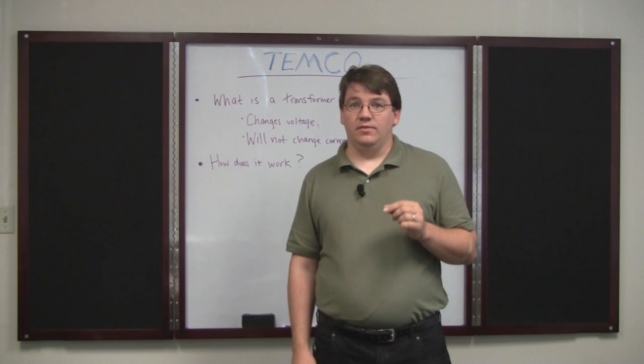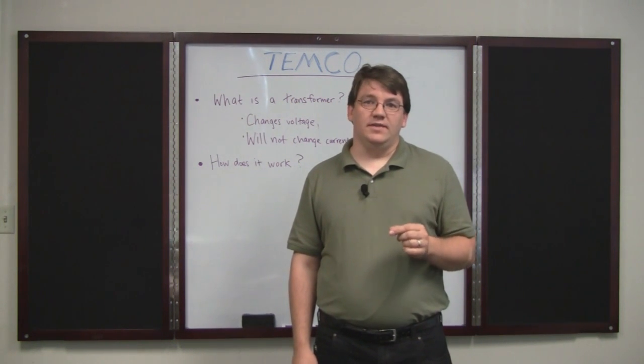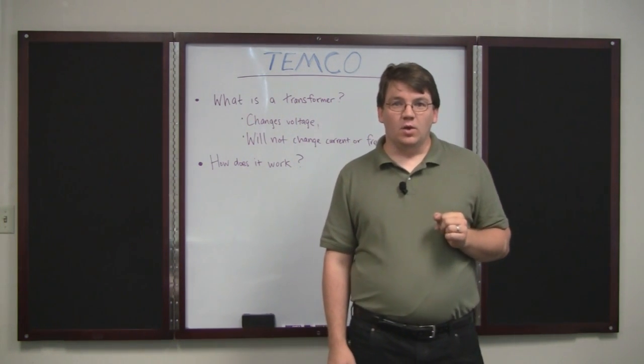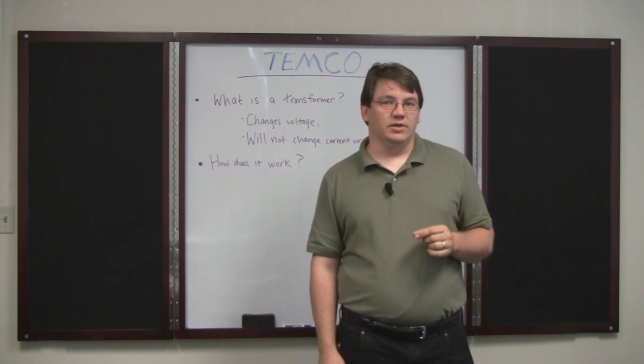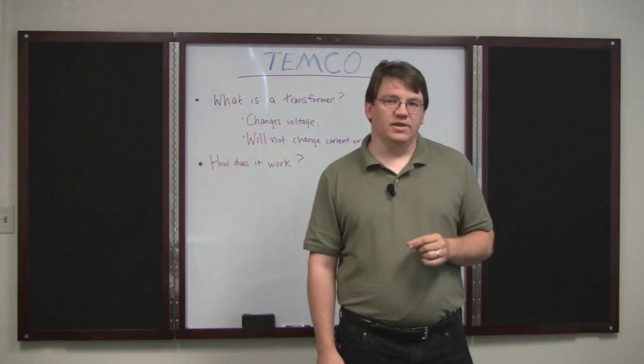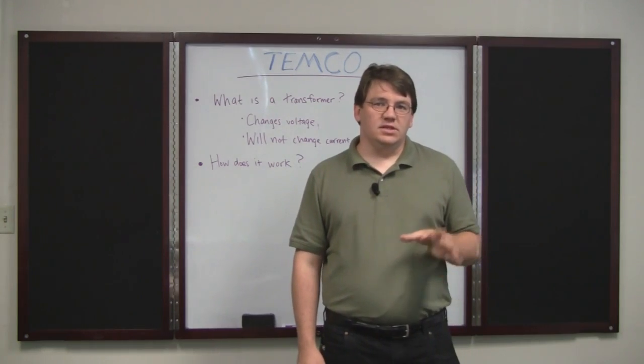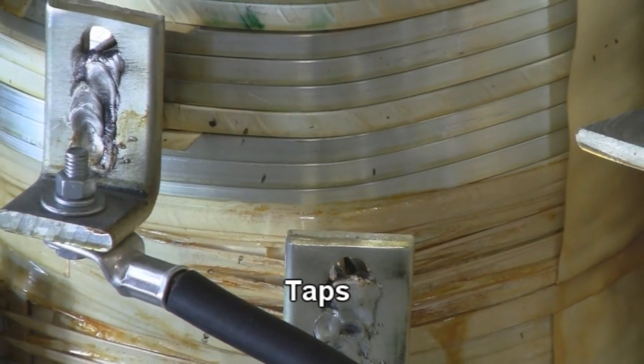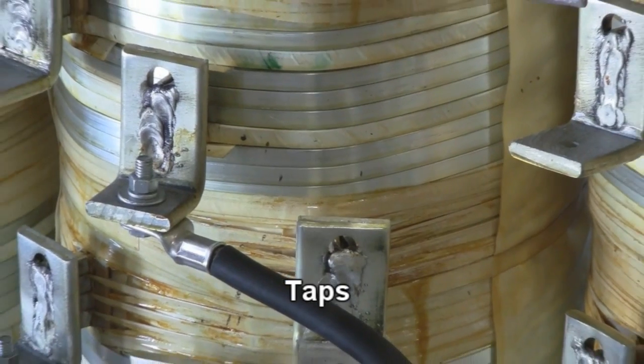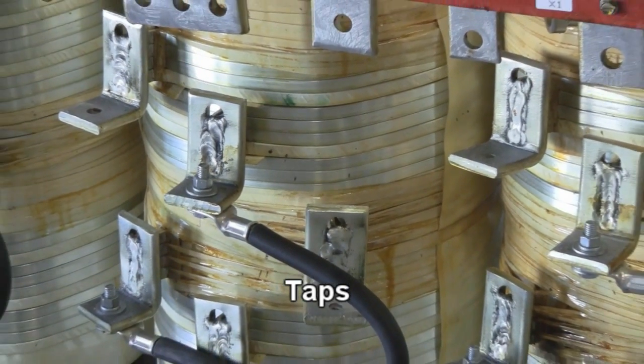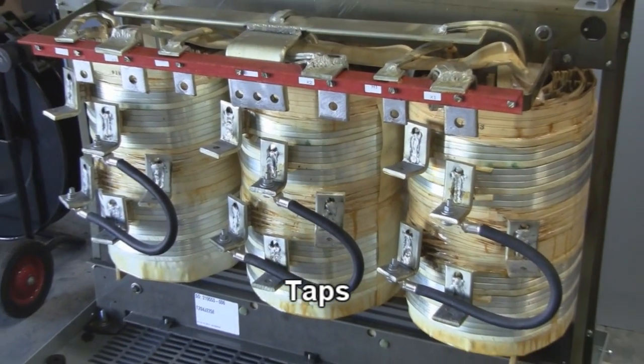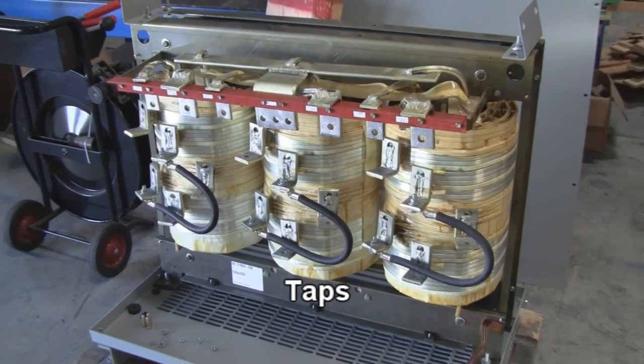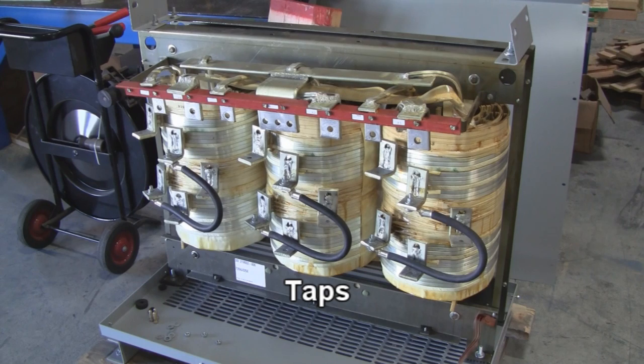Remember I talked about how the voltage on the output is determined by the ratio of turns? Well, a lot of transformers you can buy, especially in the industrial market, will have more than one voltage available at the output. These little outputs are called taps. What they are is on the secondary coil of wire, they wind it around and around, and then every once in a while they'll bring the wire out and then go back into the coil. That point right there is a voltage tap.